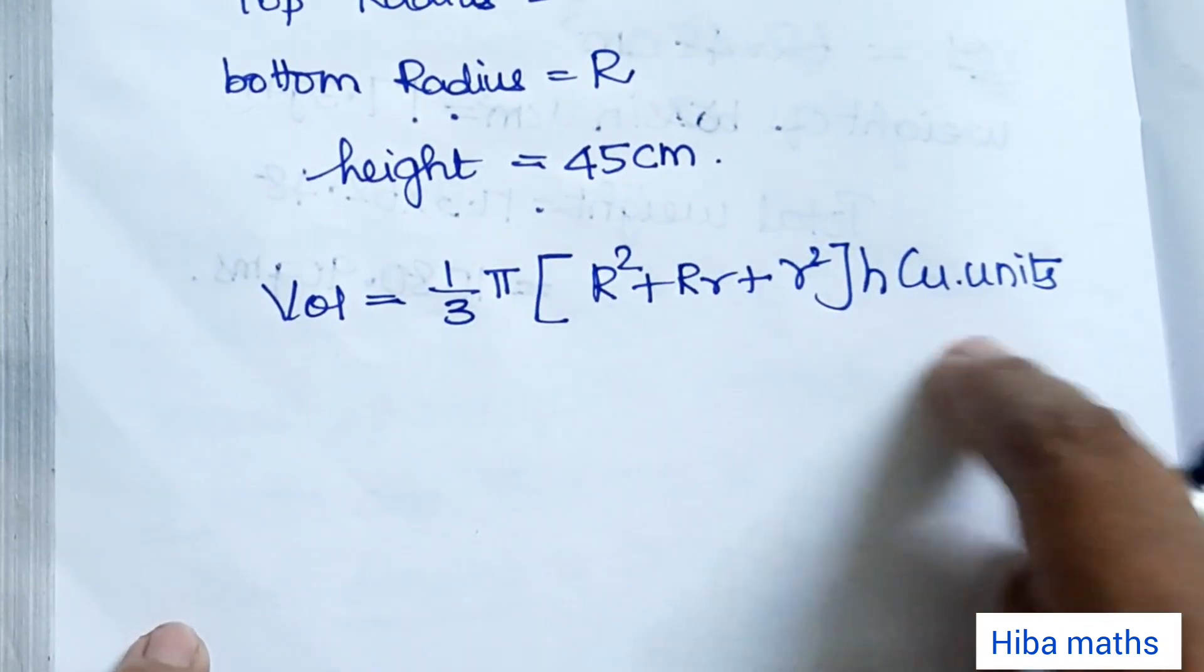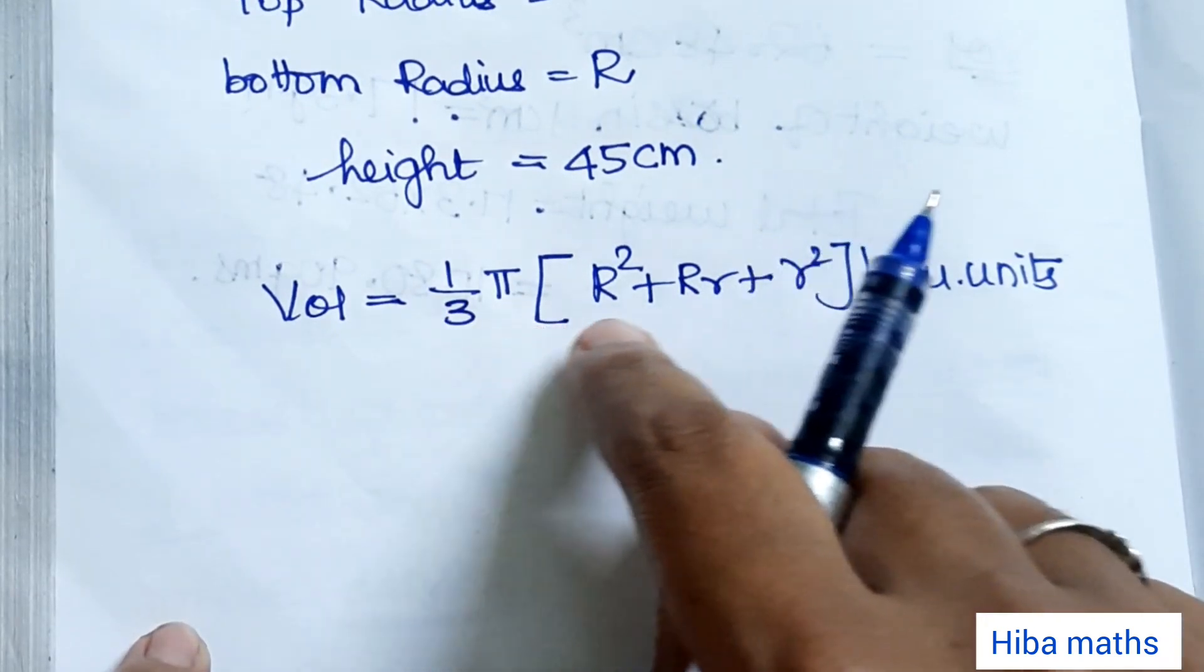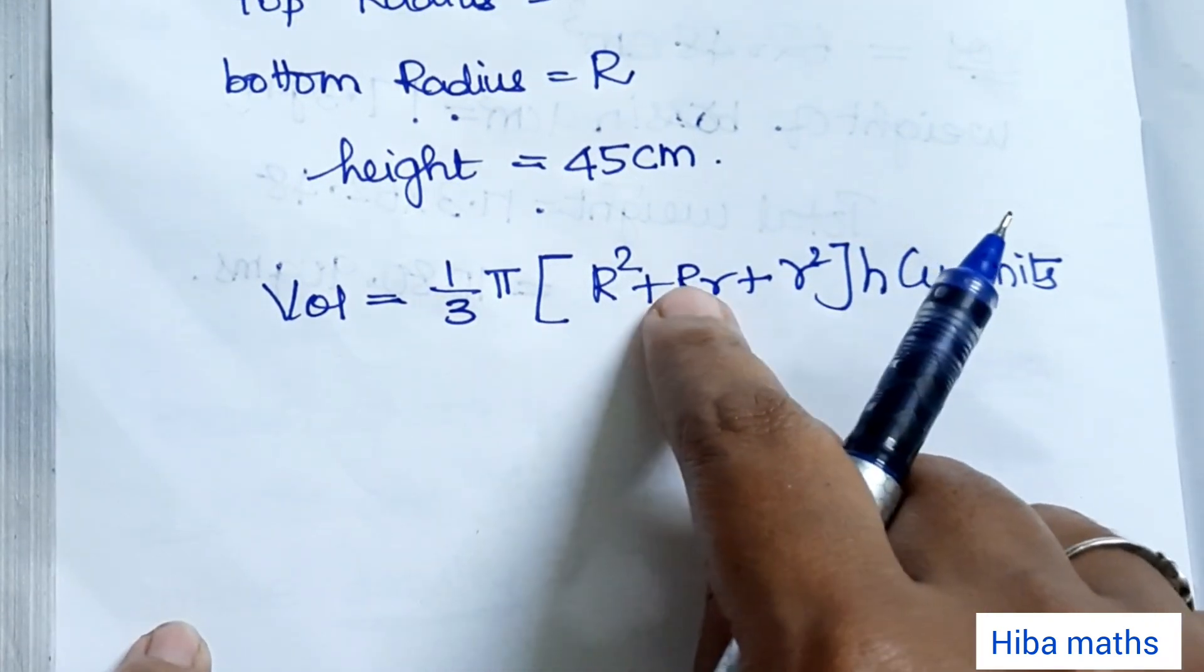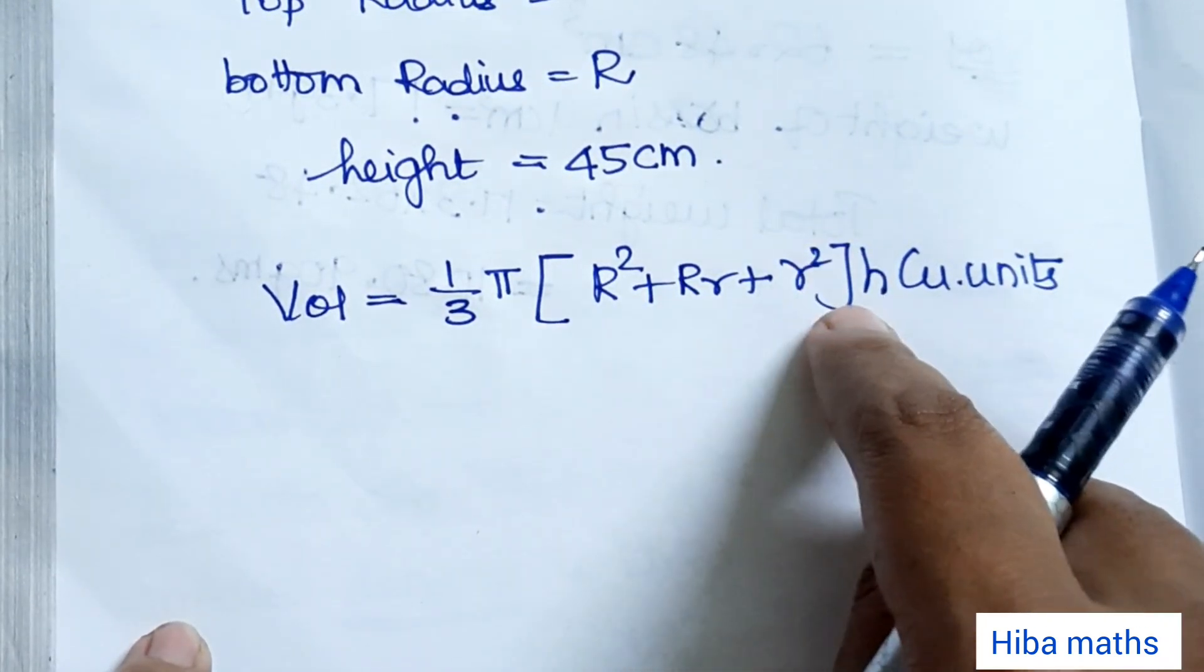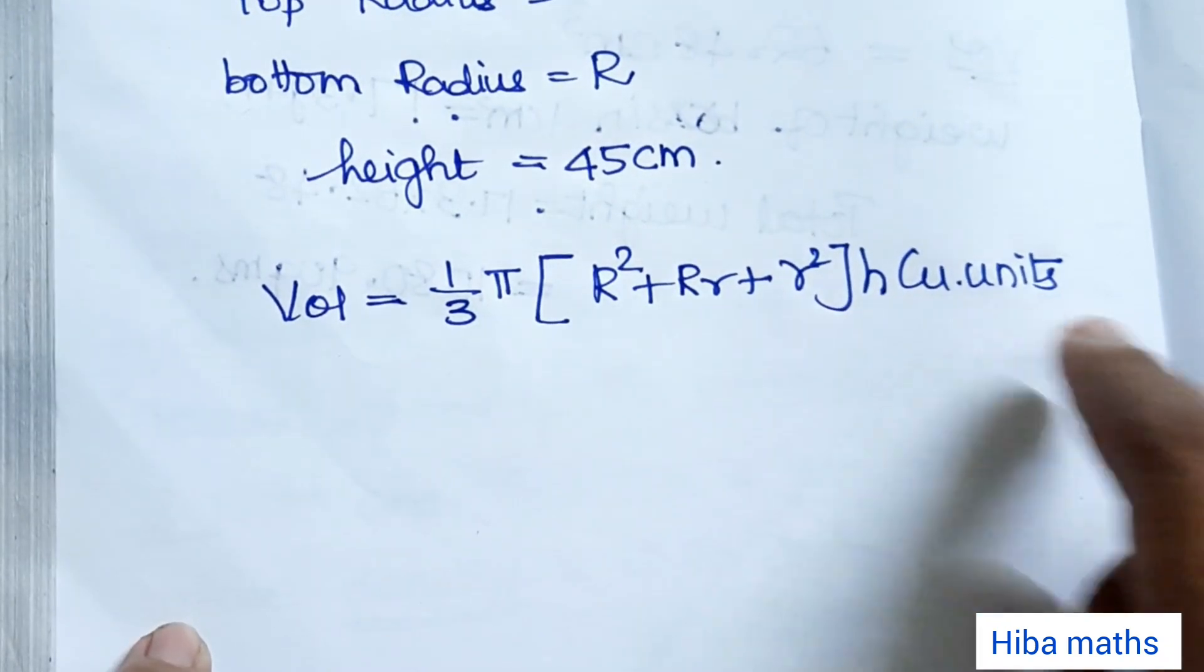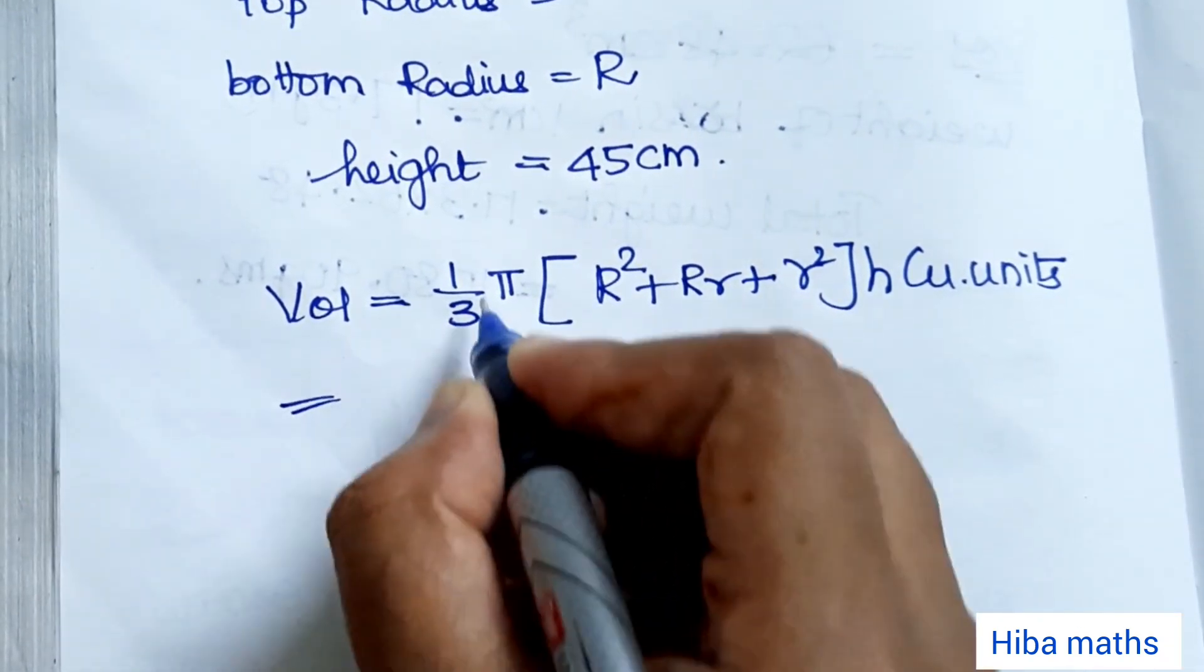Volume of frustum is 1 by 3 into pi into R square plus R into r plus r square into height h cubic units. Now we will substitute values.